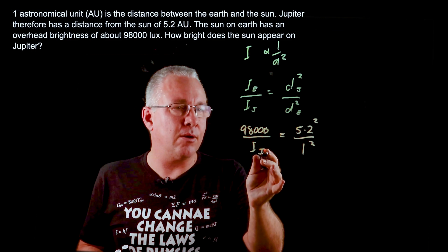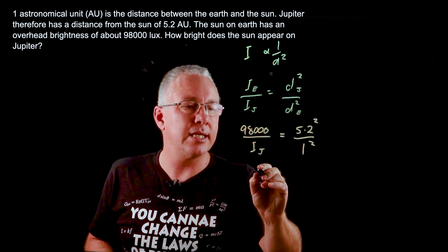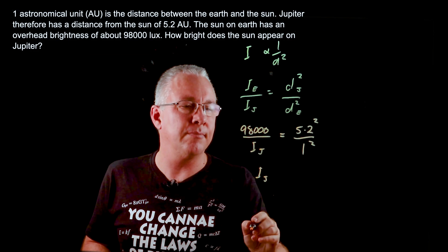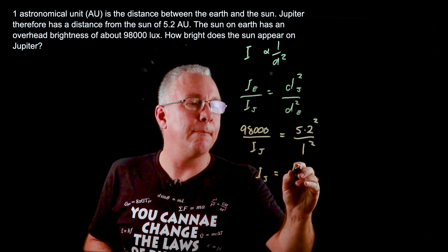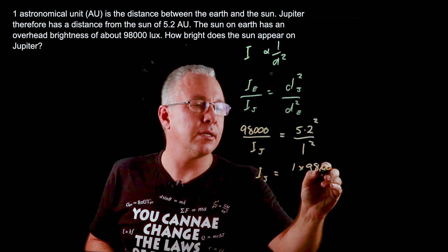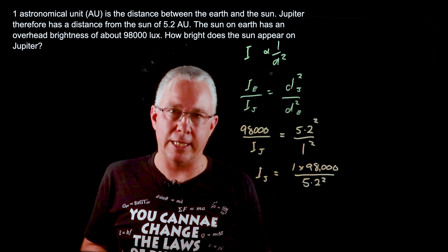And so now what we can do is rearrange that. So our intensity of Jupiter is equal to 1 multiplied by 98,000 divided by 5.2 squared.